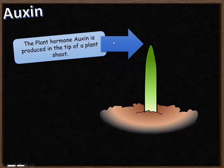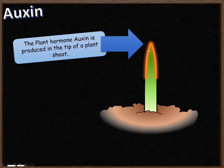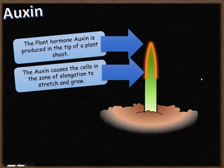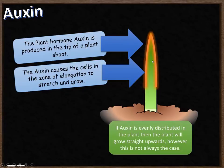Auxin, the plant hormone, is produced in the very tip of the plant shoot and then distributes itself evenly down both sides of the plant. If auxin is present, the cells in this part of the plant will elongate in the zone of elongation, causing the shoot to stretch and grow. Because the auxin has been evenly distributed, the plant shoot will grow straight upwards.